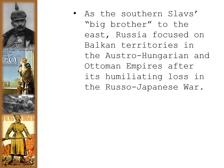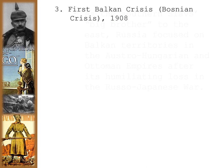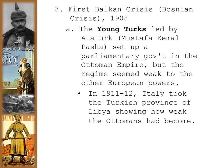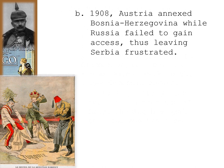Russia, as the Southern Slavs' big brother to the east, focused on Balkan territories in the Austro-Hungarian and Ottoman Empires after its humiliating loss in the Russo-Japanese War. This resulted in the first Balkan Crisis — the Bosnian Crisis of 1908. The Young Turks set up a parliamentary government in the Ottoman Empire, but the regime seemed weak. In 1911-1912, Italy took the Turkish province of Libya, showing how weak the Ottomans had become. By 1908, Austria annexed Bosnia-Herzegovina while Russia failed to gain access, leaving Serbia frustrated since it had wanted Bosnia with Russian support.